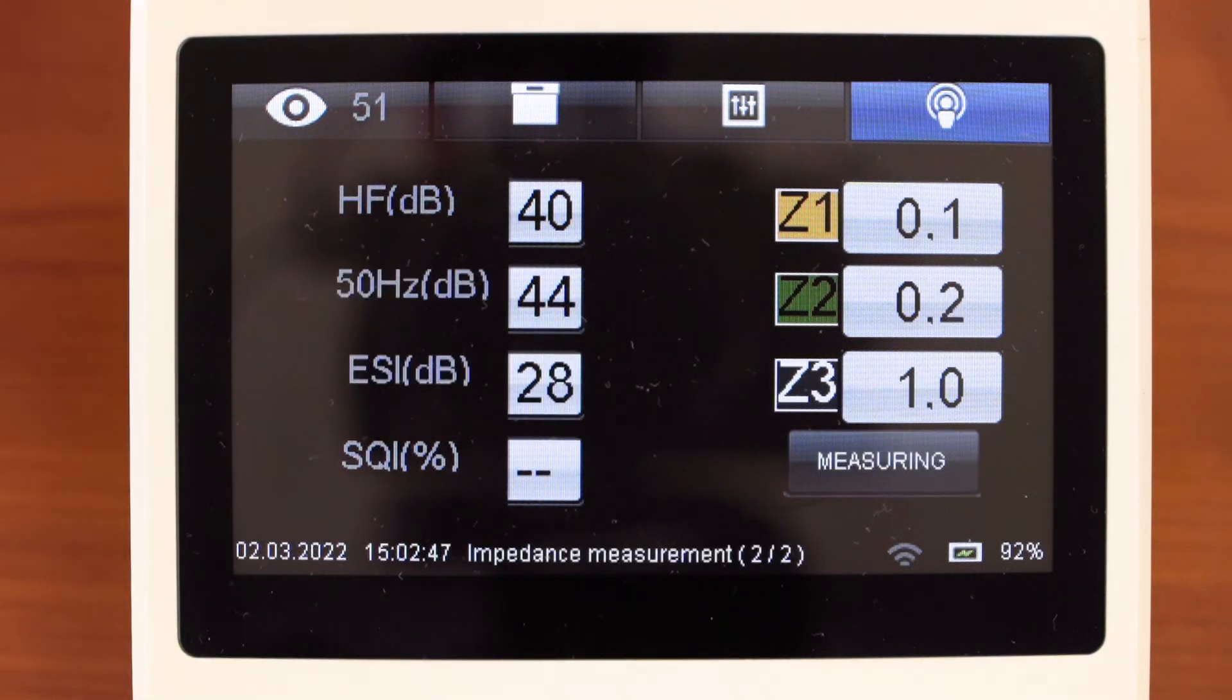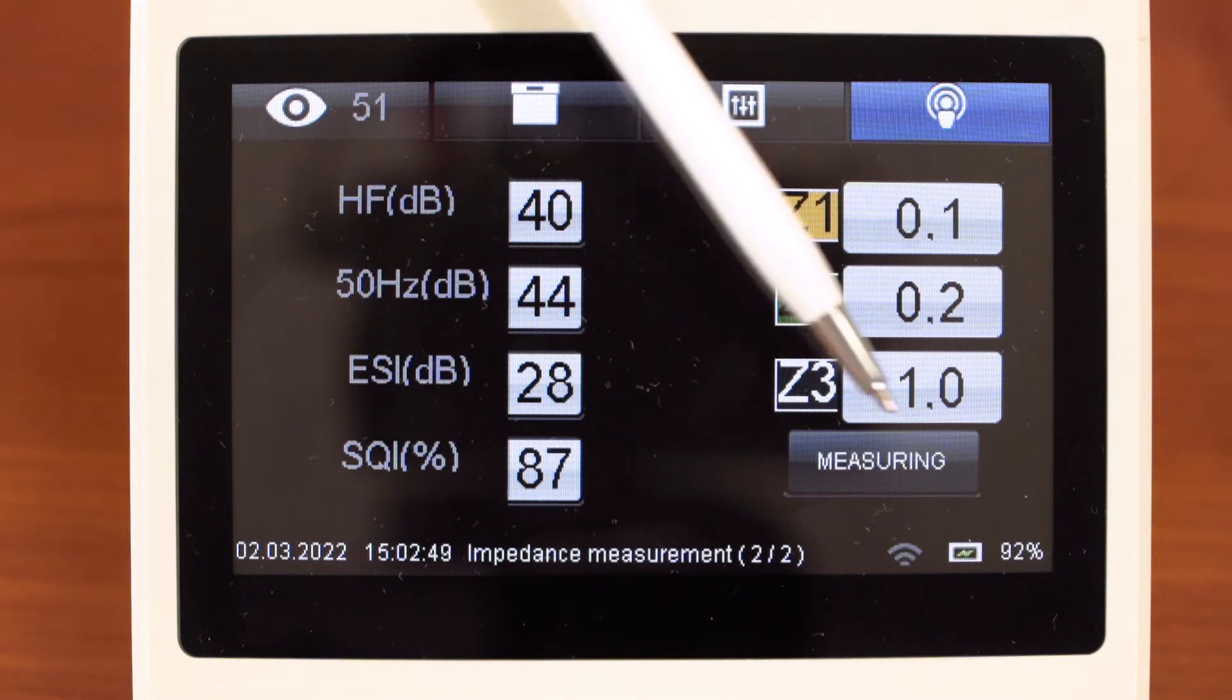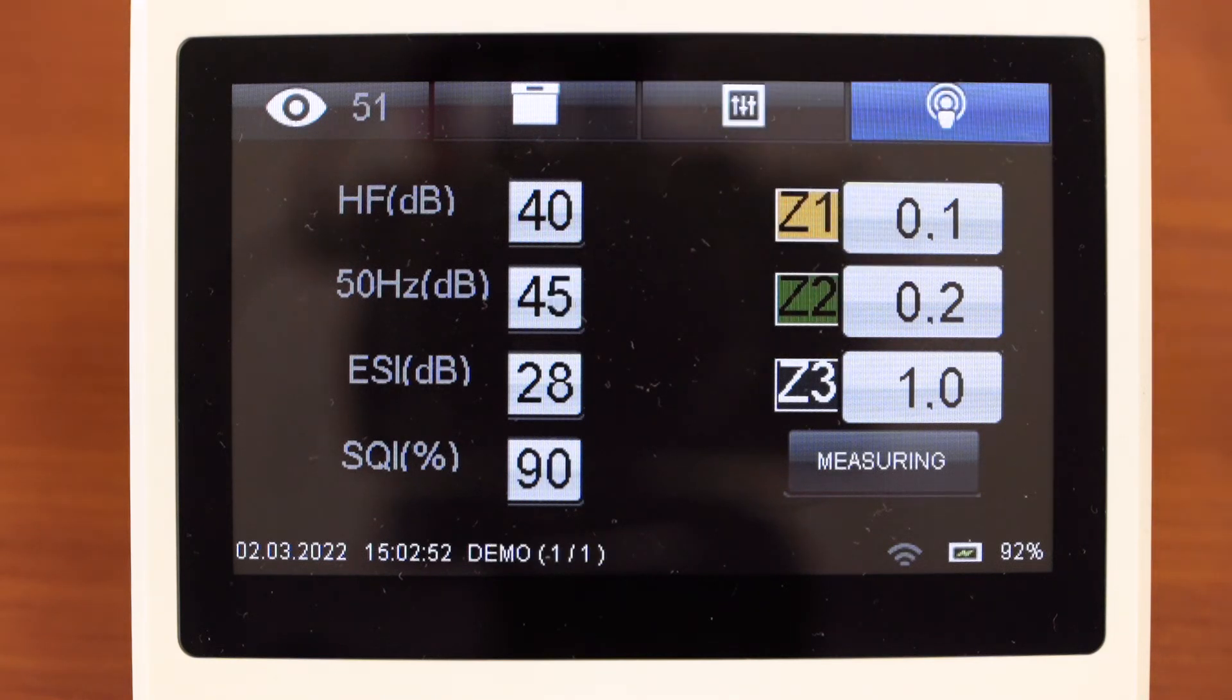You can see electrode impedance in kilo ohms. Normal impedance value is below 25 kilo ohms.